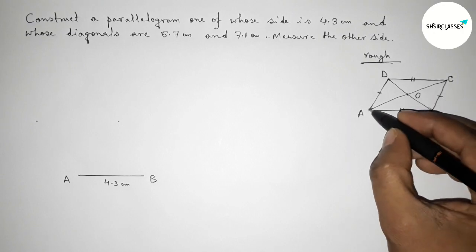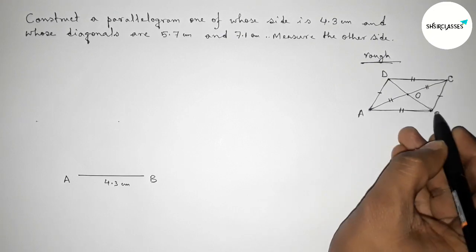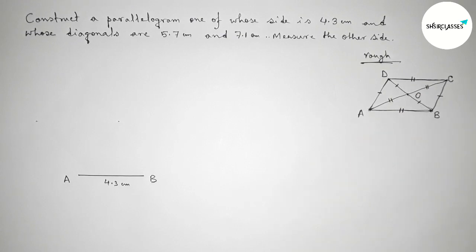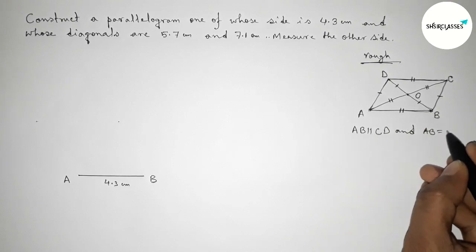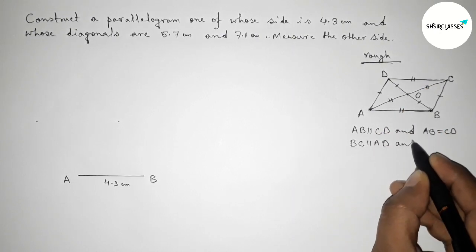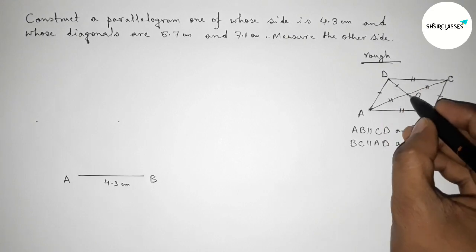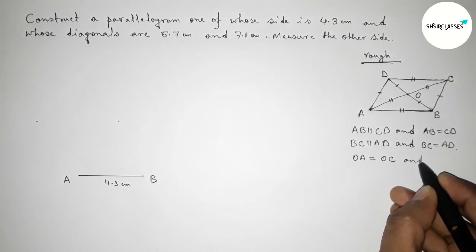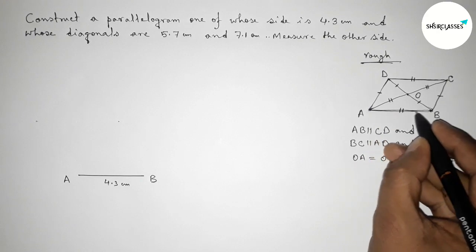We also know that the two diagonals bisect each other equally. So the length OA equals OC, and the length OB equals OD. Writing down: side AB is parallel to CD and equal in length; side BC is parallel to AD and equal in length; and for the diagonals, OA equals OC and OB equals OD.